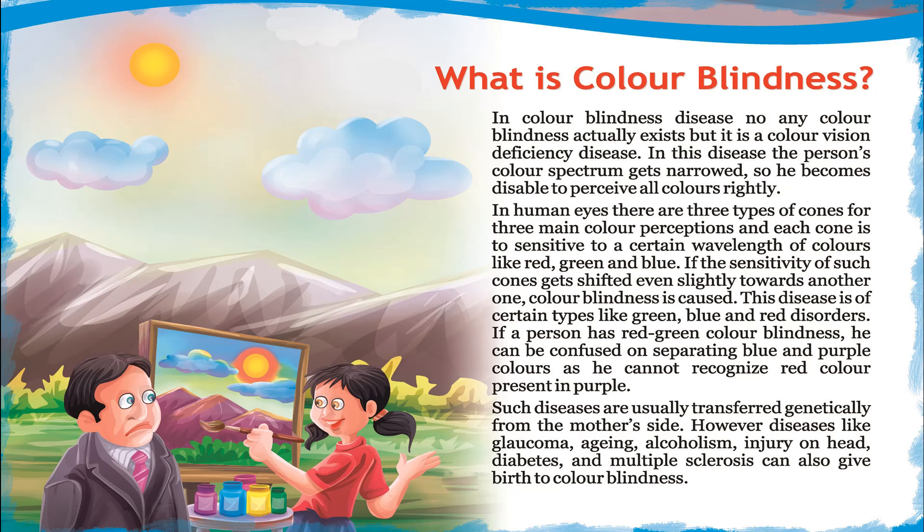If a person has red-green color blindness, they can be confused when separating blue and purple colors, as they cannot recognize the red color present in purple. Such diseases are usually transferred genetically from the mother's side. However, diseases like glaucoma, aging, alcoholism, head injury, diabetes, and multiple sclerosis can also give rise to color blindness.